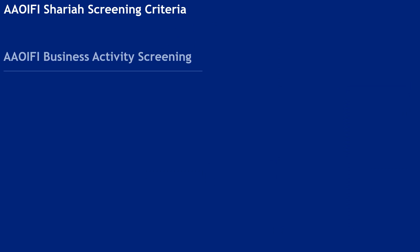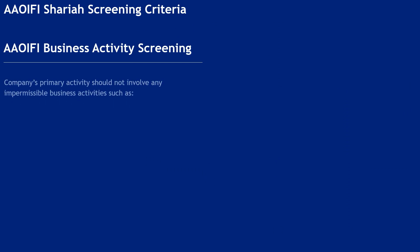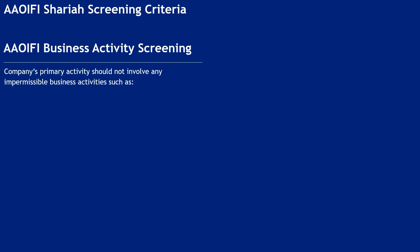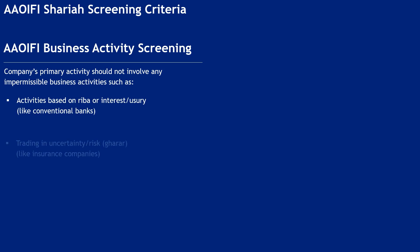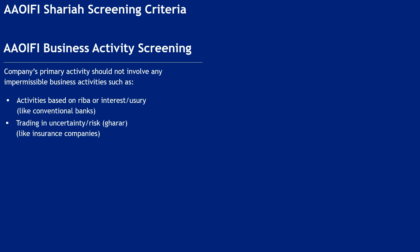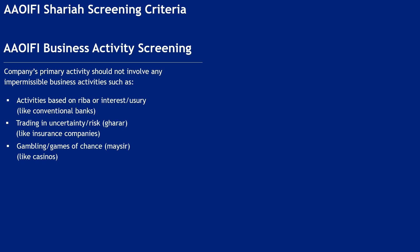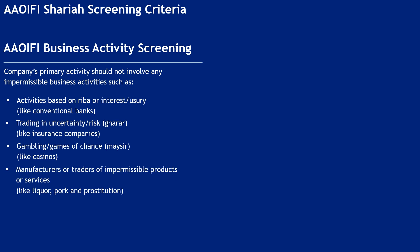AOIFI Shariah Screening Criteria — Business Activity Screening. Companies' primary activity should not involve any impermissible business activities such as activities based on riba (interest or usury), trading in uncertainty or risk, gambling or games of chance, or manufacturers or traders of impermissible products or services.